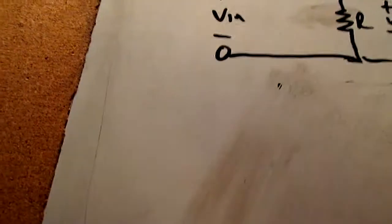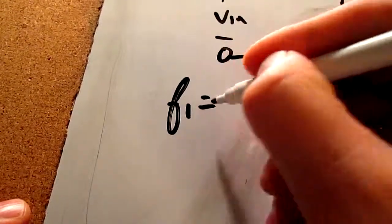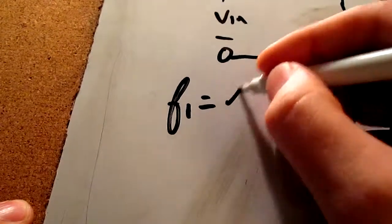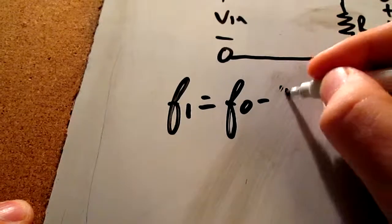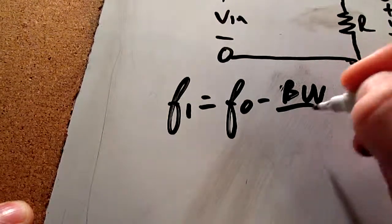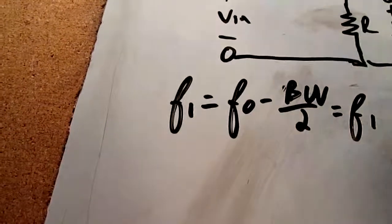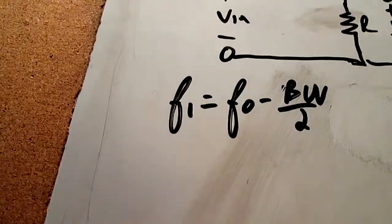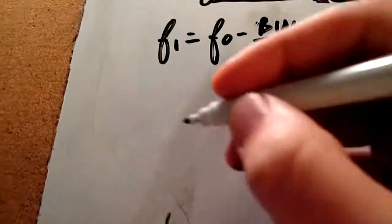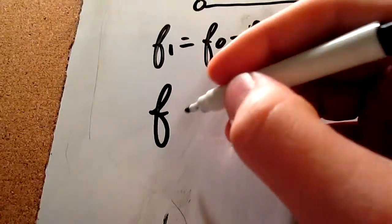In order to find your first and second frequency, f naught minus your bandwidth divided by 2, easy enough. And the same thing for the other one except you add.